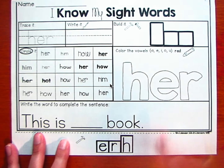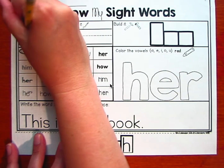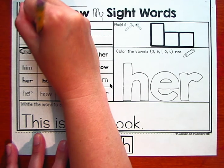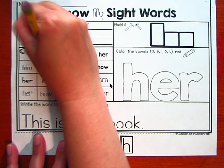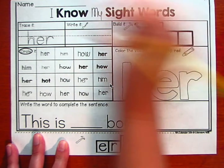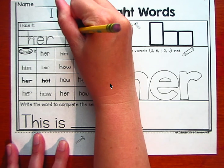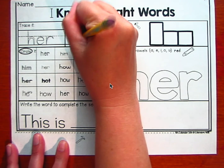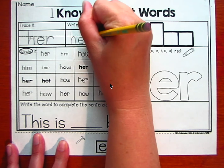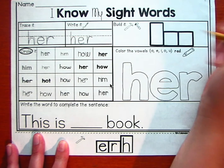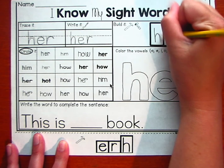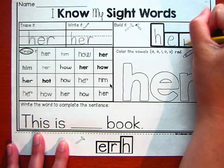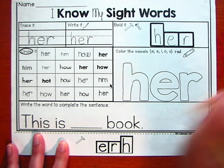Her. All right, let's trace it. H-E-R. Her. Let's write it. H-E-R. Great. Let's build it. H-E-R. Great.